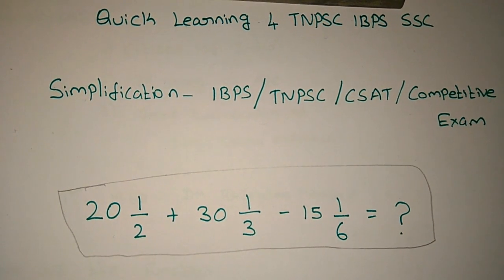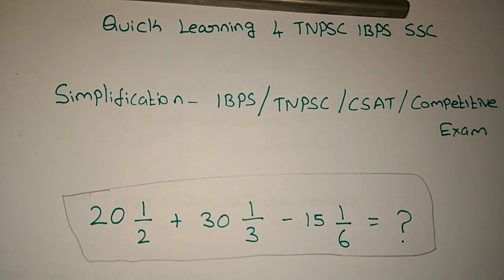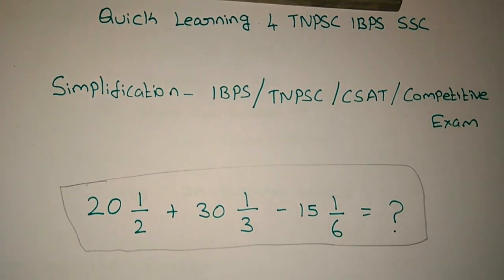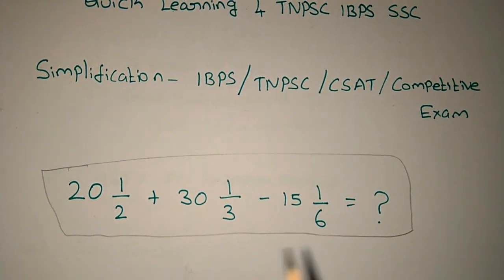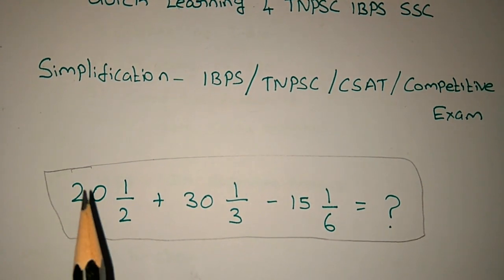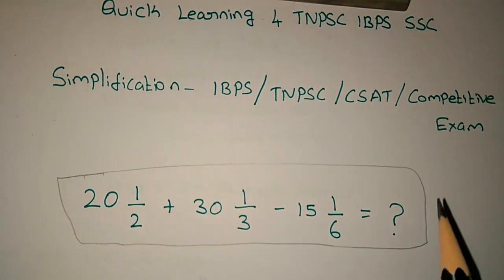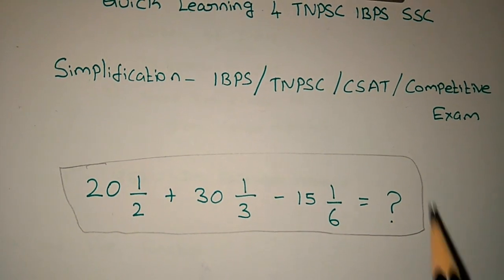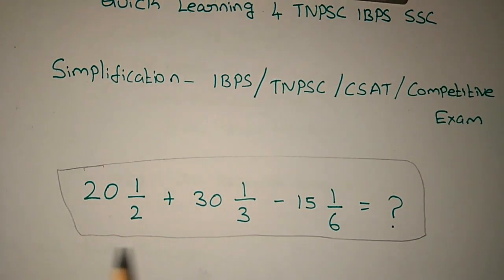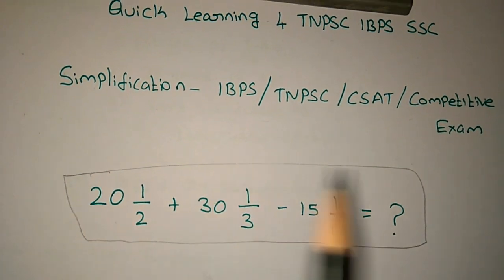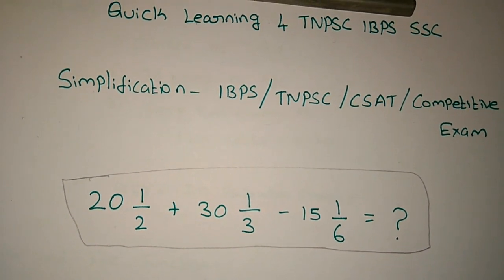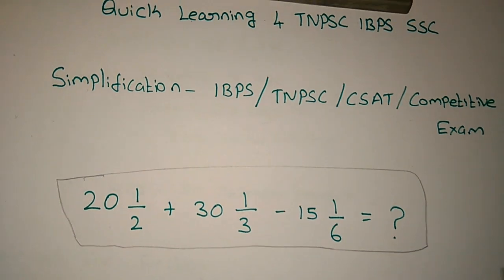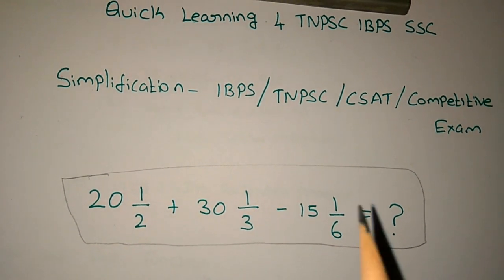Good morning friends! We will try a shortcut in Aptitude and Simplification. We will try some of the sums from last time, but we will try some of the sums in 5 steps.